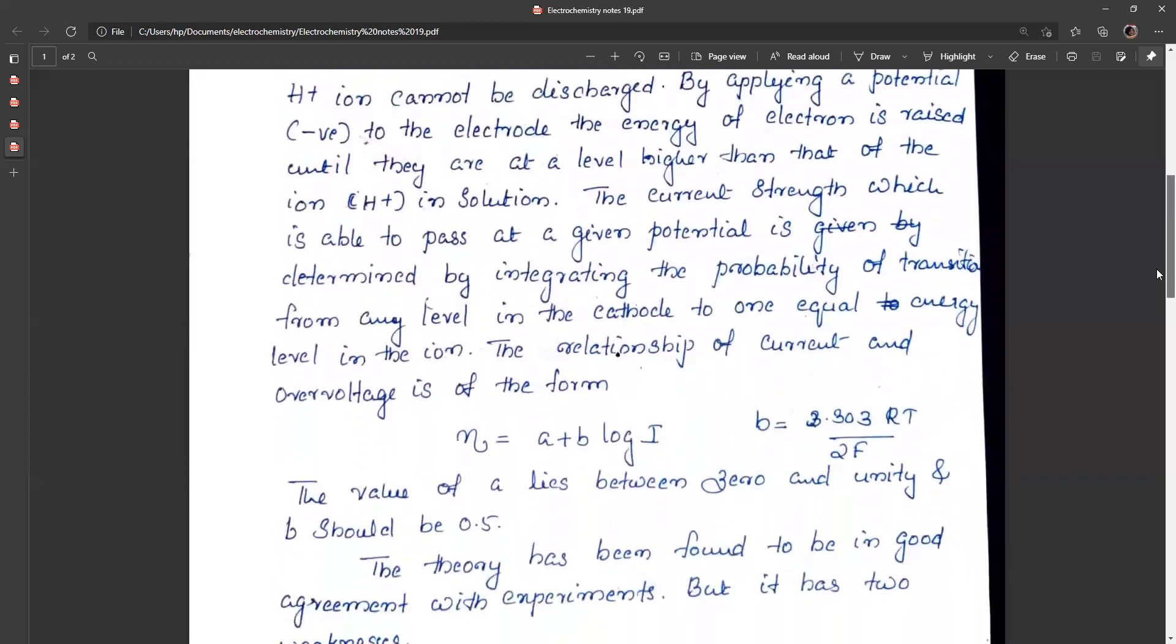The relationship between current density and overvoltage is equal to A plus B log I. B is equal to 2.303 RT by 2. The value of A lies between zero and unity and should be equal to 0.5 approximately, while B should be 0.5 approximately.